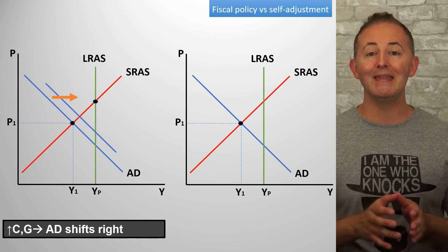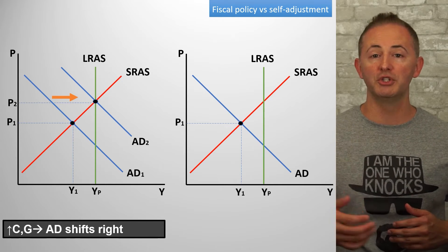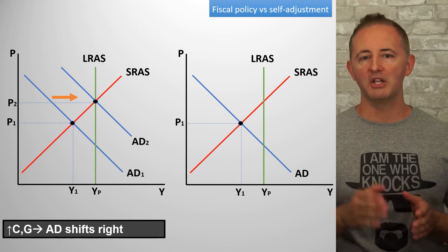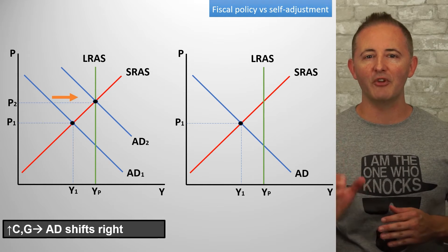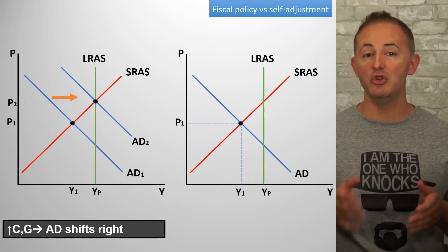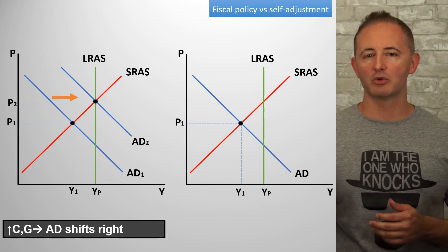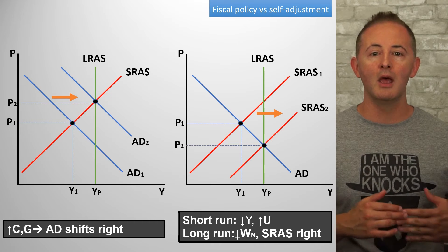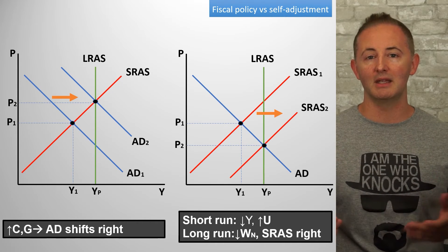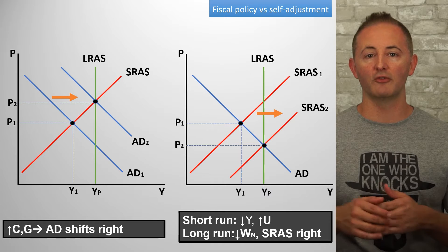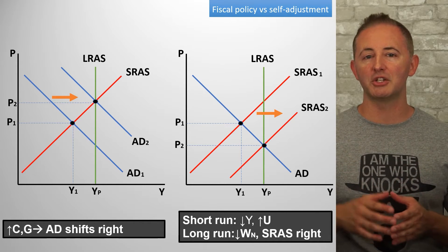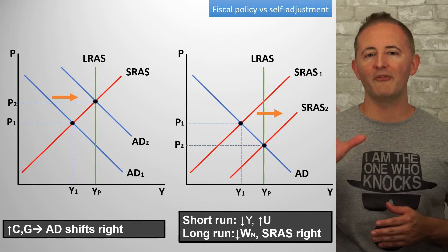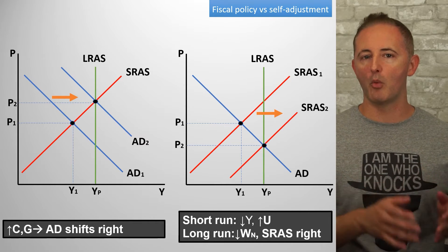Expansionary policy increases AD, which in turn increases both real GDP and price level, bringing the economy back to long-run equilibrium by shifting the AD curve. This is different than how the economy self-corrects if no governmental policies are implemented. The economy self-corrects when nominal wages that were sticky in the short run become flexible and adjust downward, shifting the SRAS curve to the right. Whichever route we go — taking action or not — the economy arrives back at the full employment level of output, though the effect on the price level varies from one method to the other.